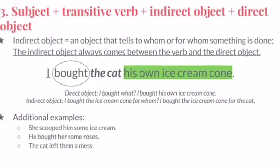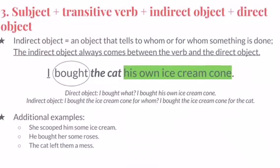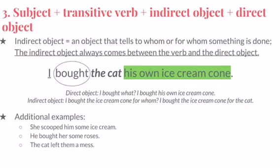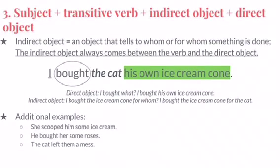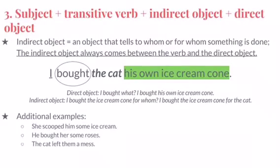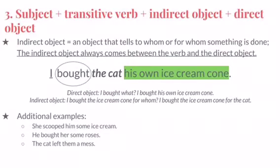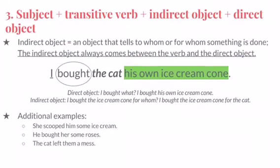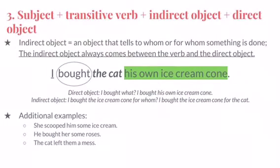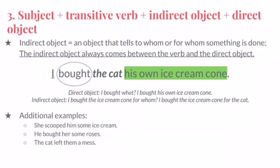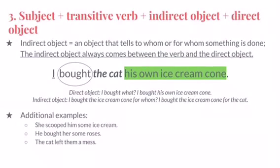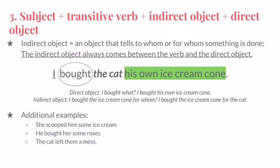Basic Sentence Pattern Number 3: Subject plus Transitive Verb plus Indirect Object plus Direct Object. This looks complicated, but if you compare it to the last pattern — subject plus transitive verb plus direct object — you're only adding one more element: an indirect object. An indirect object tells to whom or for whom something is done, and it always comes between the verb and the direct object. For instance, 'I bought the cat his own ice cream cone.' The subject is underlined, the transitive verb is circled, the direct object is highlighted, and the indirect object is italicized.